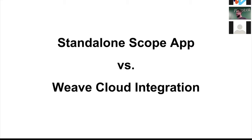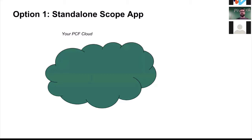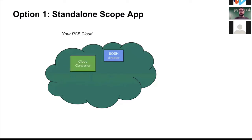You can deploy a standalone Scope app that collects all reports from your Cloud Foundry and visualizes them. Or you can integrate with Weave Cloud — Ilya will show a bit about that. In standalone mode, you start with your PCF deployment in a green cloud running in one of the well-known IaaSes. You already have a BOSH director from Ops Manager, and because you installed the ERT tile you have a bunch of VMs including a Cloud Controller.